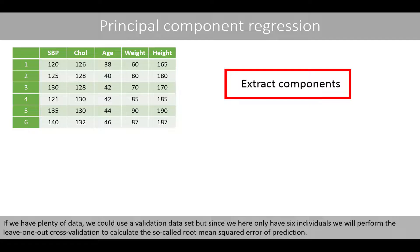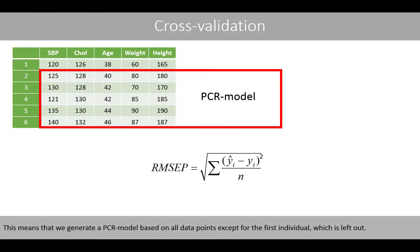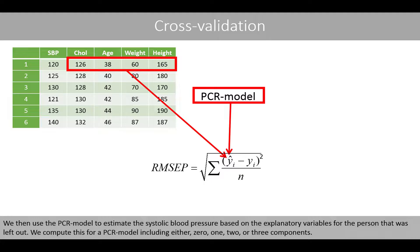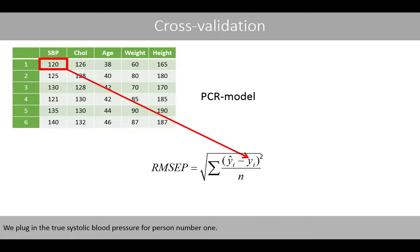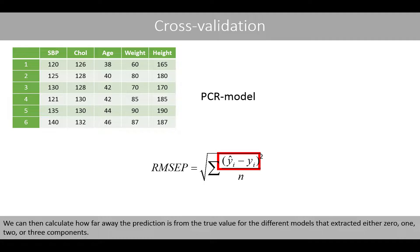Since we only have six individuals, we perform leave-one-out cross-validation to calculate the root mean square error of prediction (RMSEP). We generate a PCR model on all data except the first individual, predict their blood pressure, and compare with the true value. We repeat this for models extracting 0, 1, 2, or 3 components, compute residuals for each left-out person, and derive the RMSEP as the square root of the mean squared residuals.